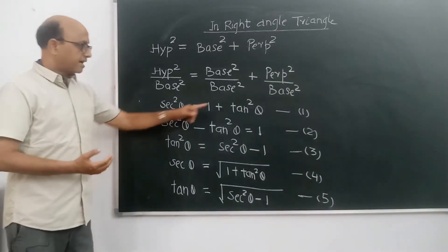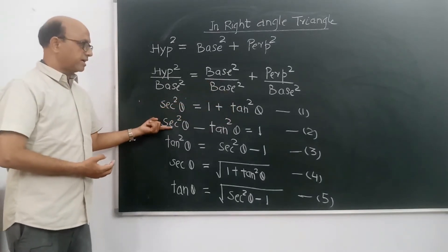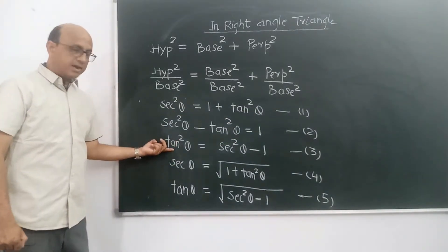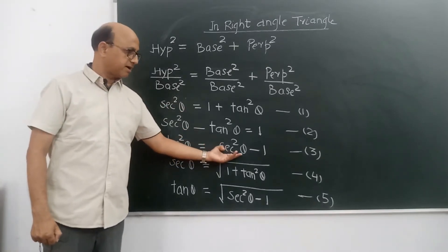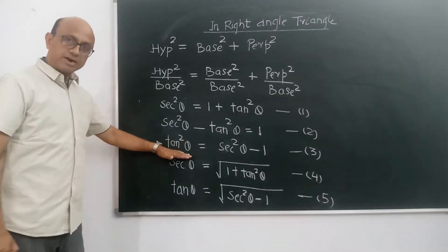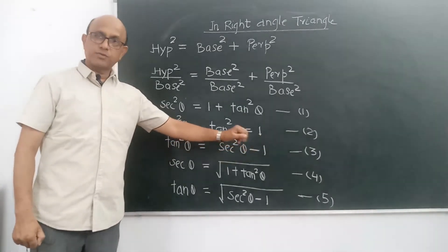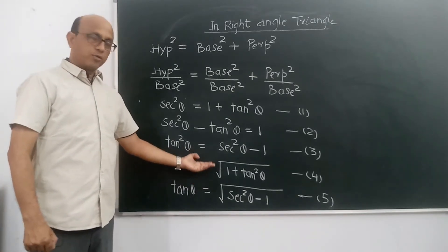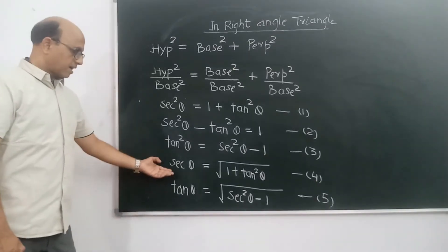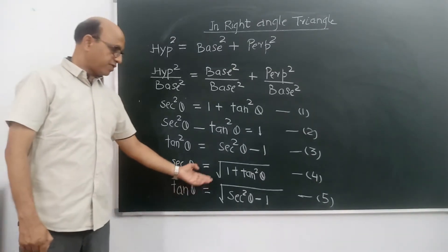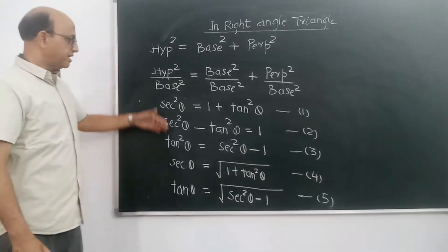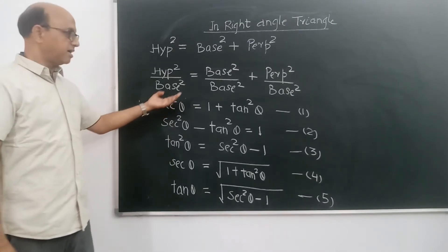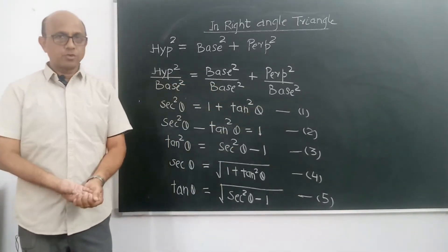Base aur base cancel ho gaye to 1 aa gaya, aur perpendicular upon base tan theta hota hai, to tan square theta aa gaya. Is relation se: sec square theta is equal to 1 plus tan square theta. Agar tan ko shift karein to sec square theta minus tan square theta is equal to 1. Tan square theta is equal to sec square theta minus 1. Sec theta is equal to square root of (1 plus tan square theta), aur tan theta is equal to square root of (sec square theta minus 1). Yeh 5 relationships sec theta aur tan theta ke beech mein hain.